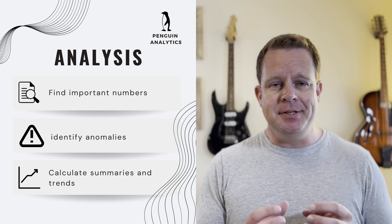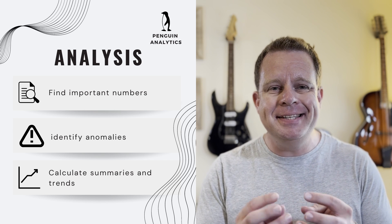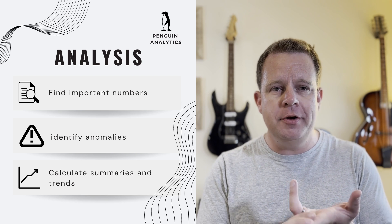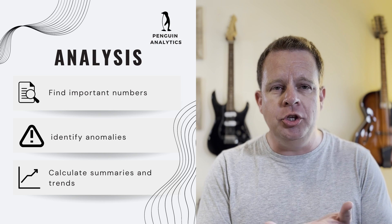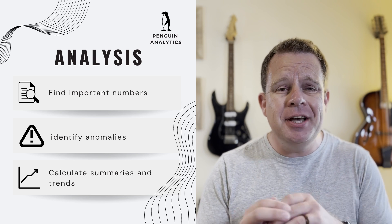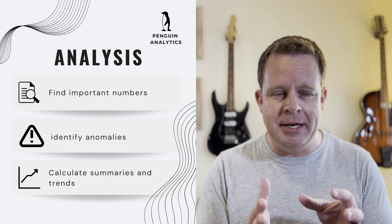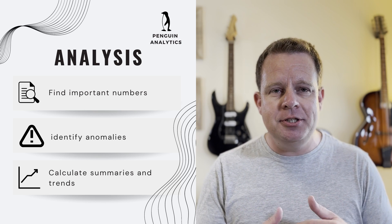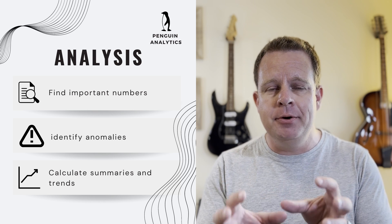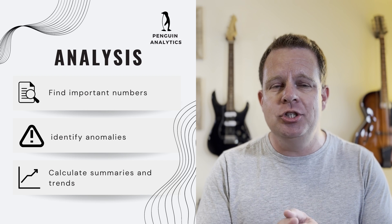The second level is analysis — really being able to understand what's happening within the data. Which are the most important numbers on the report? What are those numbers doing — are they going up or down? Are they what you would expect? What is the average, and is the data in line with it? Is there a trend within a piece of time series data? You can begin to build all this out once you've built understanding, allowing you to identify the most important parts and see trends.